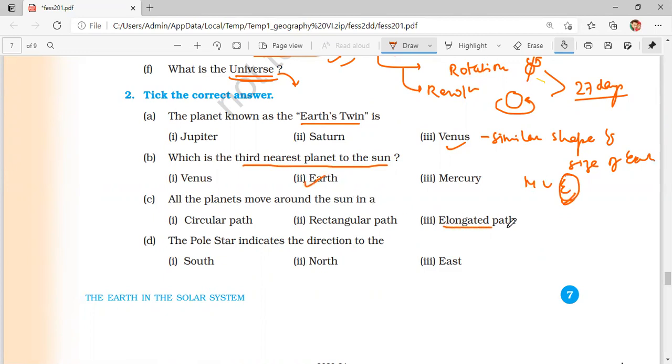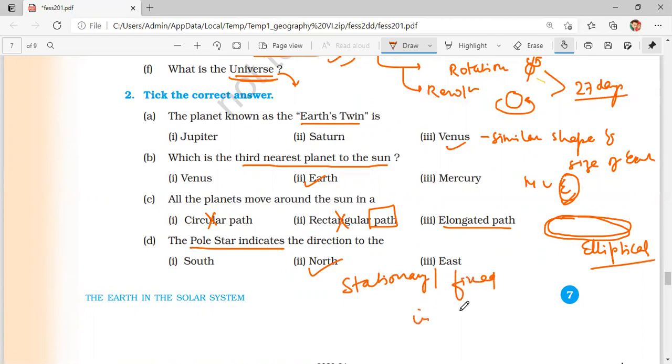All the planets move around the sun in an elongated path, we also call it elliptical path. They do not move in circular path or rectangular path. Pole star indicates the direction of north. They have a stationary or fixed position in the night sky in the north direction.